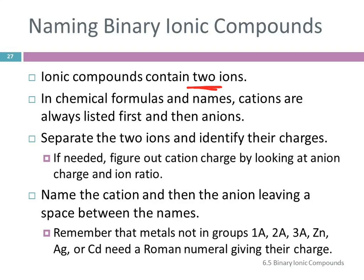Remember when you're naming those cations that the metals that are not in these groups, 1A, 2A, 3A, zinc, silver, or cadmium, you have to include a Roman numeral in their name to specify the charge. Because otherwise, the person reading the name of the compound won't know which ion you're talking about. Iron makes two ions, plus two and plus three. The only way in the name that we can communicate that is with the Roman numeral.